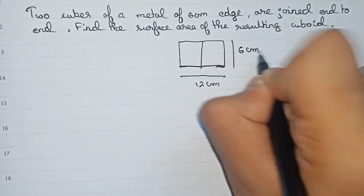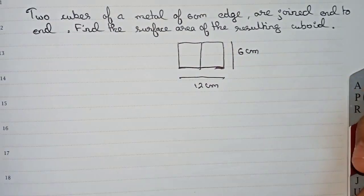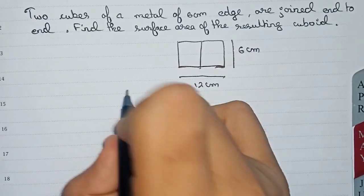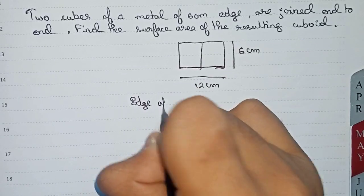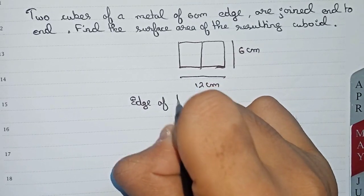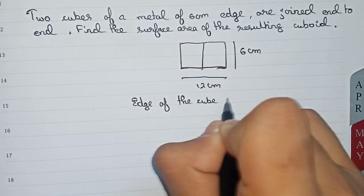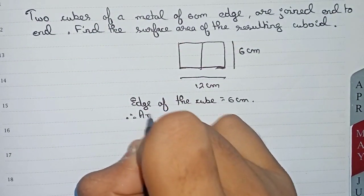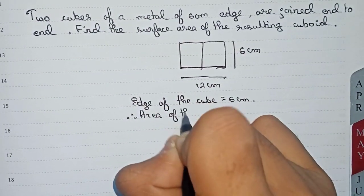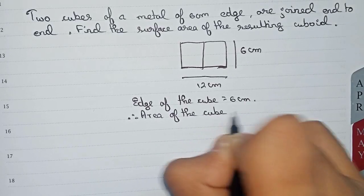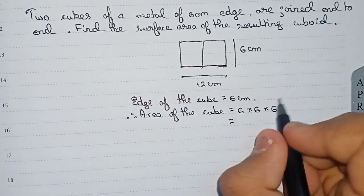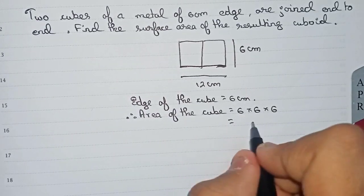We will find out the area first. Edge of the cube is equal to six centimeter. Therefore, area of the cube is equal to six into six into six, as area means length into height into breadth. So six into six into six becomes 216 centimeter cube.